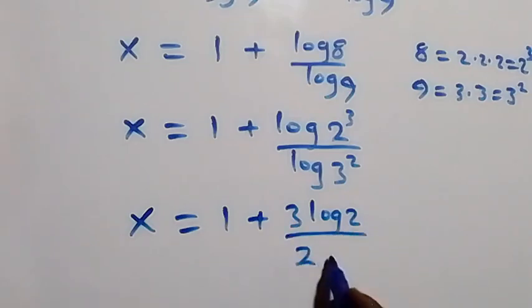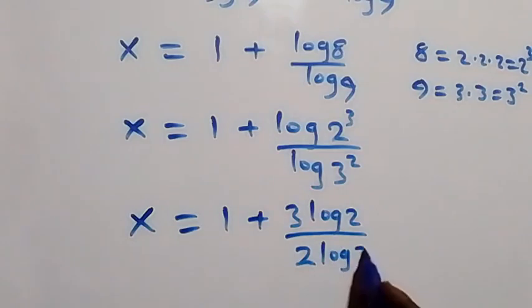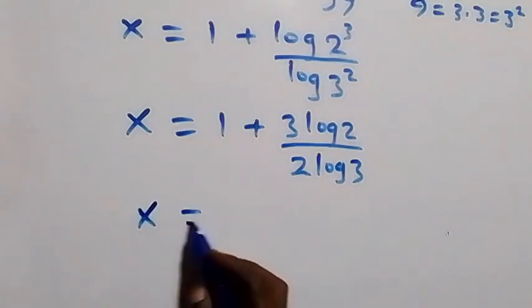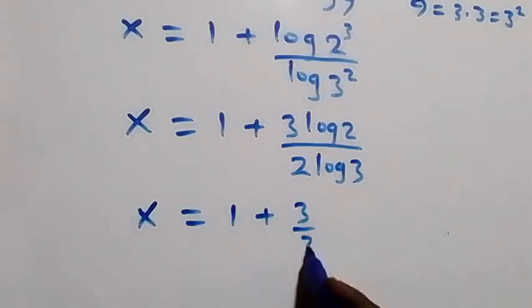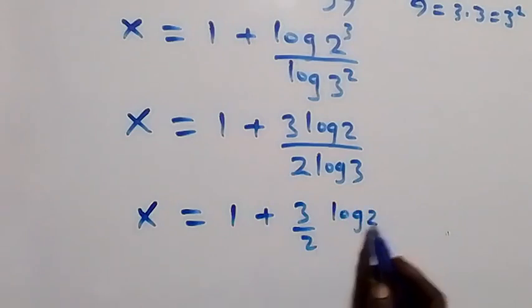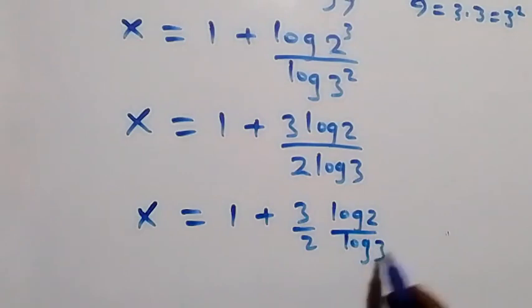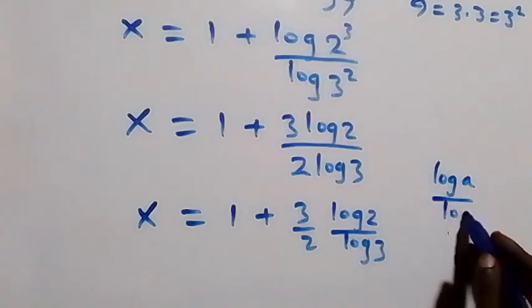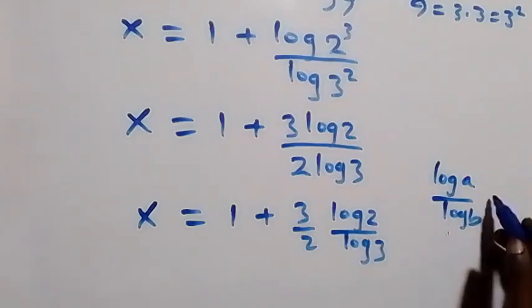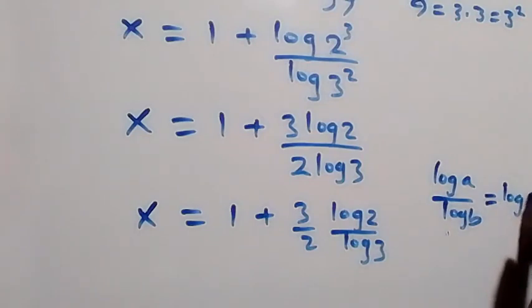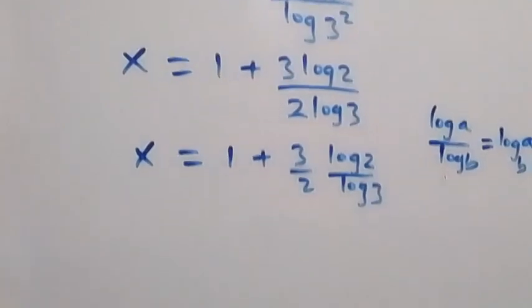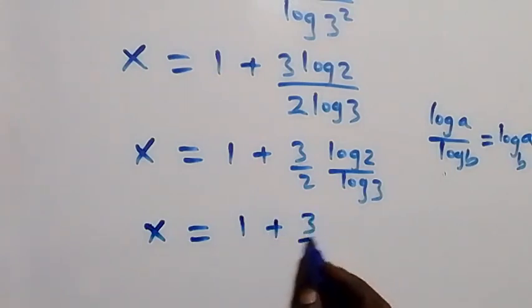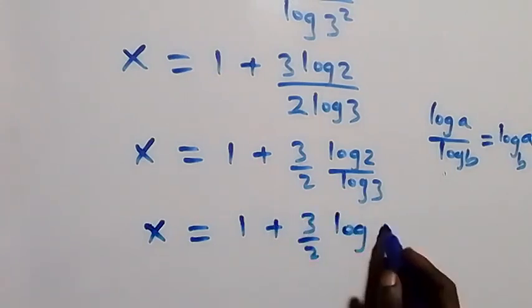Dividing and separating the fraction, x equals 1 plus (3 over 2) times (log 2 over log 3). Applying the change of base formula, log a over log b can be written as log a to base b. So x equals 1 plus (3/2) log 2 to base 3.